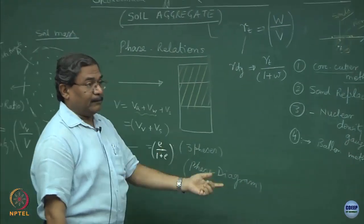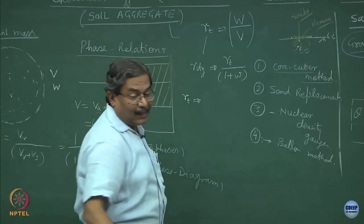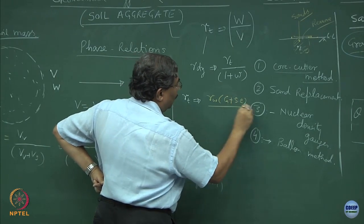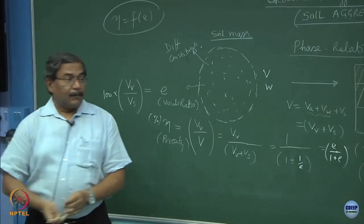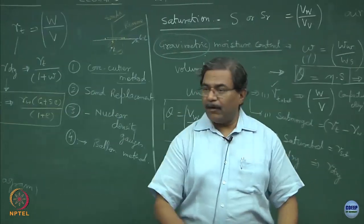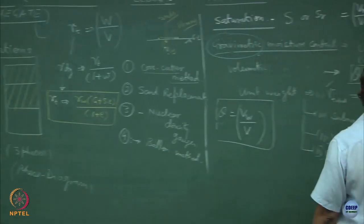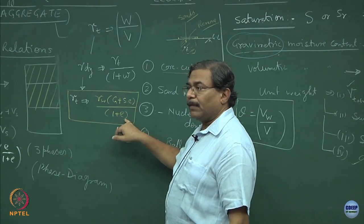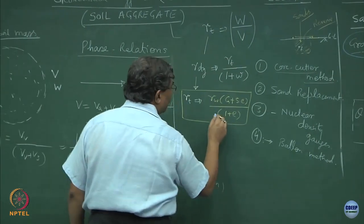One thing still pending is saturated unit weight. Try to derive: gamma total equals gamma W multiplied by (G + S·e)/(1 + e), where G is specific gravity of the soil, S is saturation, e is void ratio, and (1 + e) is the specific volume of the soil. This whole term is the weight divided by volume. Gamma total = gamma_W × (G + S·e)/(1 + e).